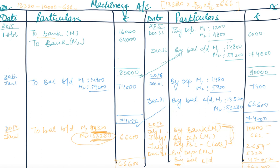Friends, this is how you post the selling entry in the machinery account. The key new concept here was the treatment of the sale: posting three entries — depreciation on M1, sale proceeds to Bank, and loss to P&L. Hope you are clear with the written down value method. Download our app Scholars Learning for sequential studies. Thank you.